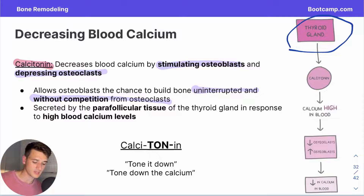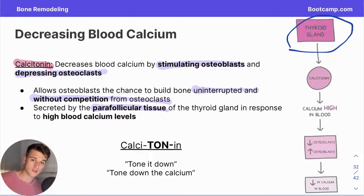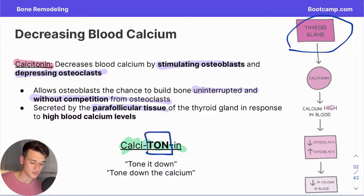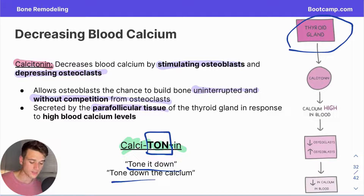One more note: it's the parafollicular tissue of the thyroid gland that releases calcitonin. To remember what calcitonin does, emphasize the 'tone' in calcitonin — think of 'toning it down' or toning down the calcium, because calcitonin is looking to tone down the calcium in the blood.